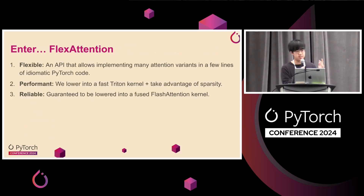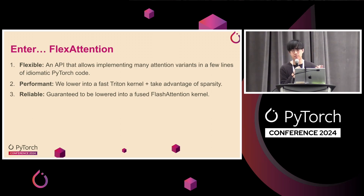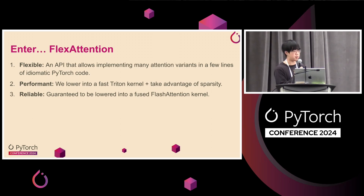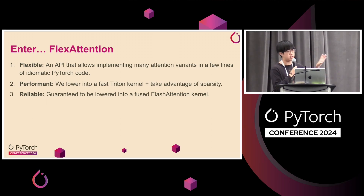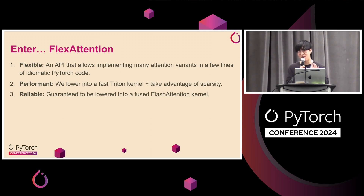What we're providing is this API, Flex Attention, which aims for three things. First, it's flexible: it allows implementing many attention variants in a generic manner in a few lines of idiomatic PyTorch code. Second, it's performant: we lower into a fast Triton kernel and can take advantage of sparsity in your attention mask. Third, and this is a subtle point, it's reliable: if you write it in this API, it is guaranteed to be lowered into a fused Flash Attention kernel. It's very hard to mess this API up.